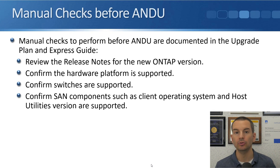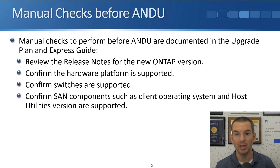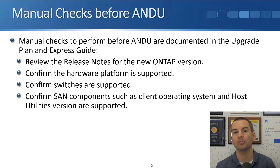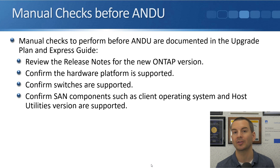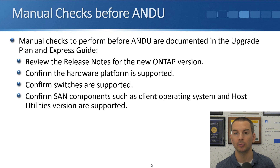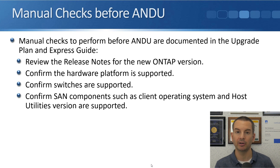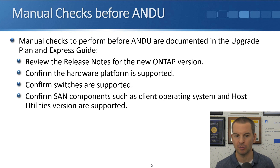When you are using ANDU, there are some manual checks you should do first. ANDU does automate most of the process, but there are a few things you need to check manually. These are documented in the upgrade plan from Upgrade Advisor and also in the Express Guide PDF. You need to review the release notes for the new ONTAP version and check there are no issues relevant to your particular environment. Also confirm that the hardware platform you're using is supported — if you're using an older platform, there may be a maximum ONTAP version it supports, so check you have a supported platform.